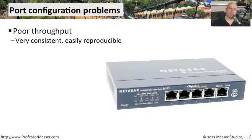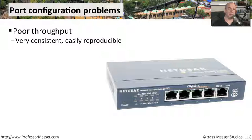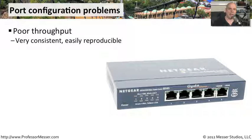Inside switches and networking devices, there are many different configuration settings. If these settings are not quite right, we'll see problems like very poor throughput. We're connected to the network, we have a signal, we can communicate and do file transfers to our servers, but we're just not getting good performance — and it's consistently bad every single time we perform a file transfer.